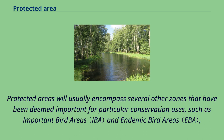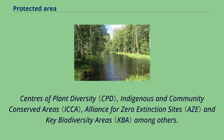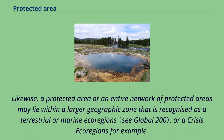Protected areas will usually encompass several other zones that have been deemed important for particular conservation uses, such as important bird areas and endemic bird areas, Centers of Plant Diversity, Indigenous and Community Conserved Areas, Alliance for Zero Extinction Sites, and Key Biodiversity Areas among others. Likewise, a protected area or an entire network of protected areas may lie within a larger geographic zone recognized as a terrestrial or marine ecoregion, or a crisis ecoregion.